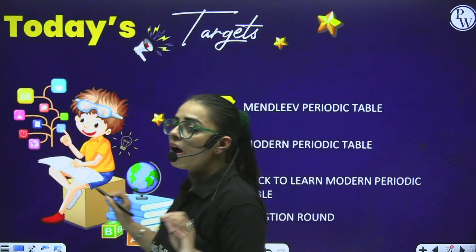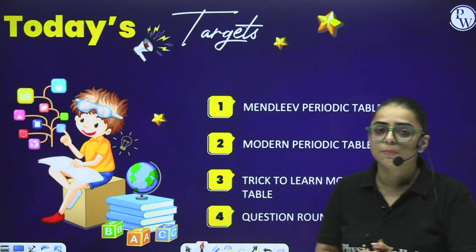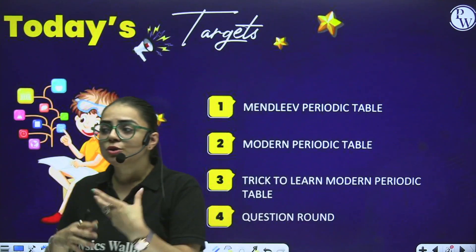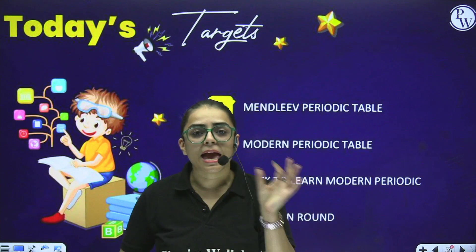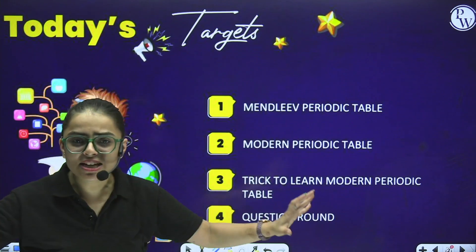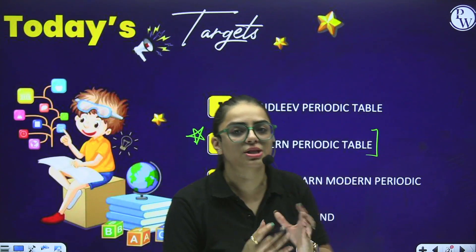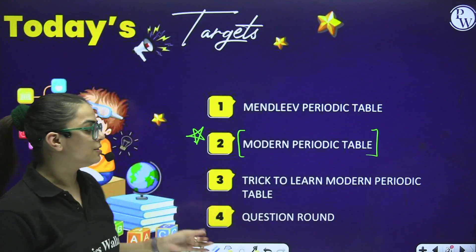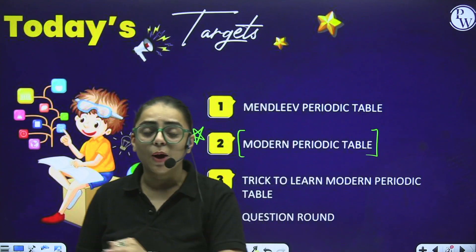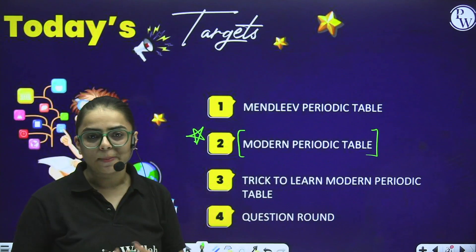The very first topic we are going to start is Mendeleev's Periodic Table. Though I gave you a small introduction in the previous session, today we will understand in depth about Mendeleev's Periodic Table and on which principle it works. Moreover, we are going to understand the merits and demerits of Mendeleev's Periodic Table. After that we'll cover the Modern Periodic Table - very interesting and very important - and then a trick to memorize the Periodic Table on your own. The last segment is your question round.